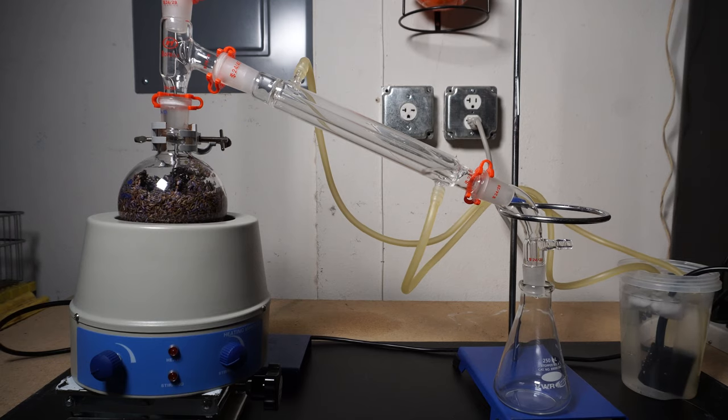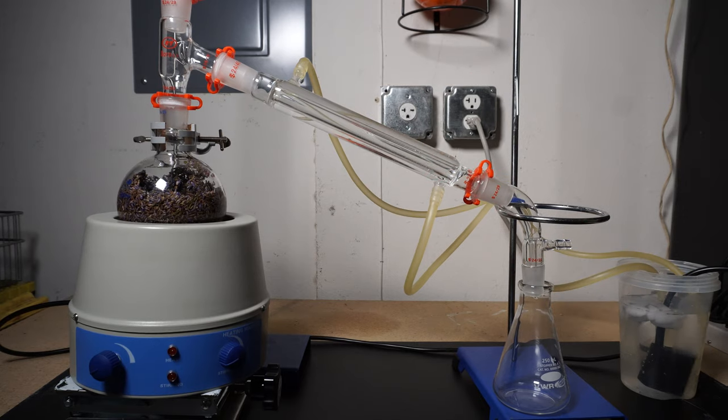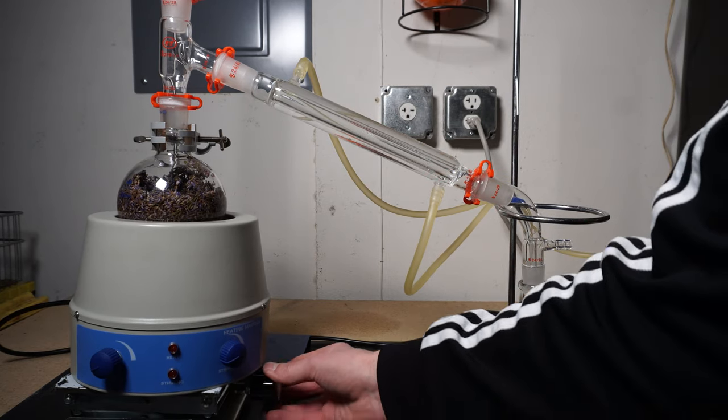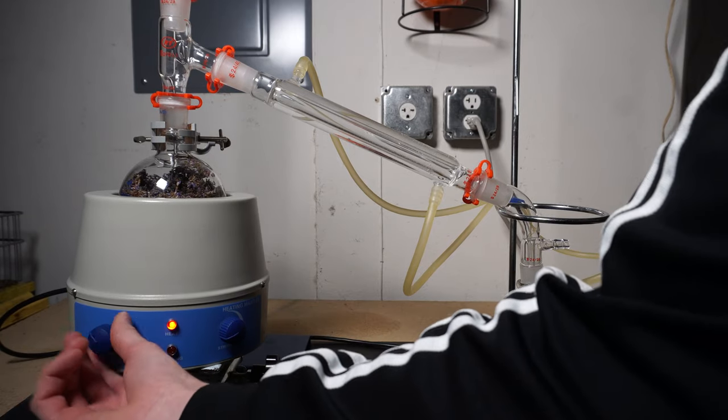Following this I set up a short path distillation apparatus and turn on my condenser. Hydrodistillation is ideal for pulling oil from organic materials. Water makes the last separation much easier and the product will also be free of any other solvents like ethanol.